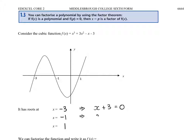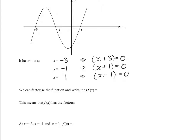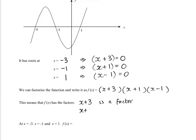If we rearrange this equation, we get x plus 3 equals 0, so that's one factor. If we rearrange this one, we get x plus 1 equals 0. And on this one we get x minus 1 equals 0. So if you think about it, when you solve a quadratic and you get your two brackets, you get your two roots or where it cuts the x-axis. On this one what we've got is the three brackets we can write down. So we can actually factorise it into these three brackets: x plus 3, x plus 1, and x minus 1.